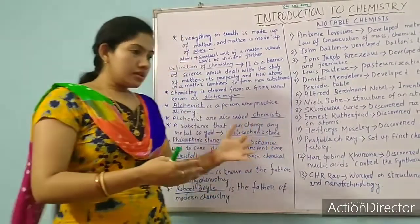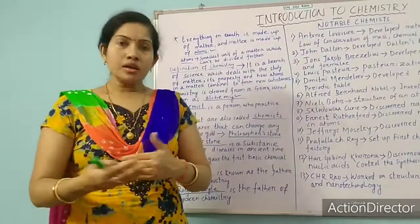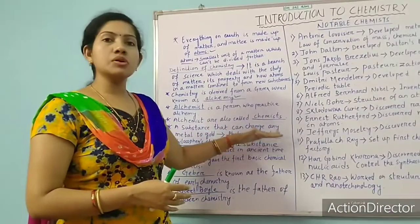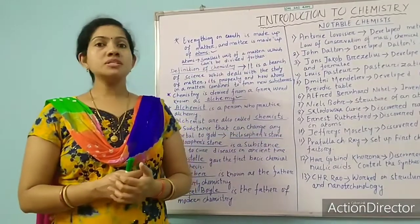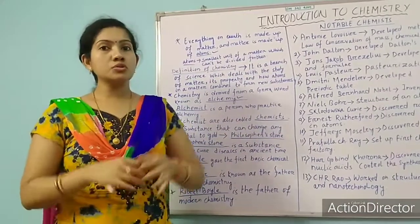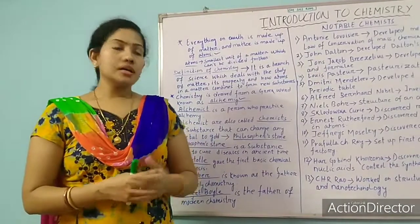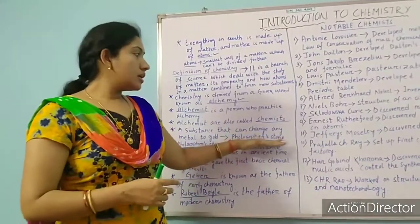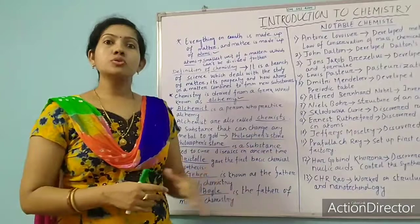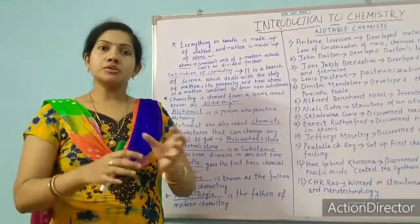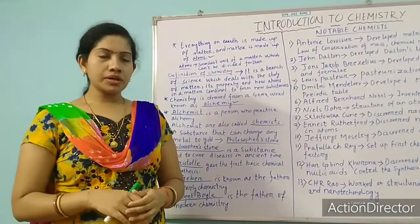Gradually they discovered symbols, and a kind of stone — we call it the philosopher's stone — which they used to cure several diseases, and also this stone was used to convert metal into gold.